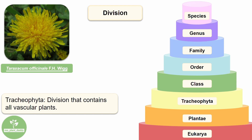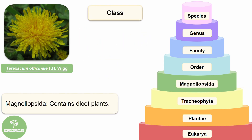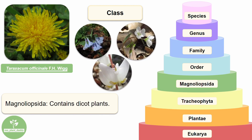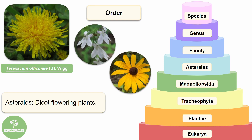Some examples of other members of Tracheophyta include rattlesnake ferns, red maples, and violets. These plants look very different from our dandelions, so we have some slimming down to do. Breaking Tracheophyta down into classes, the one we'll focus on is Magnoliopsida, which contains dicot plants — examples include Virginia Bluebells, Spring Beauties, and Dutchman's Breeches. Breaking Magnoliopsida down into orders, the one we're interested in is Asterales, a group of dicot flowering plants. Some members of Asterales include Spike Lobelia and Black-eyed Susans. We're getting closer to appearing like a dandelion, but we're still not quite there.